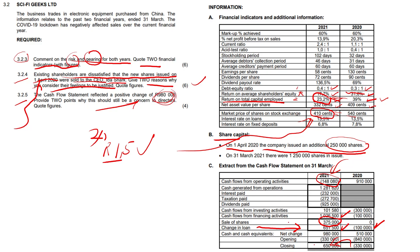They sold shares to the value of 375,000 — that's the one Ida Shark took — which brought 375,000 into the company and helped boost the change in cash. Then they took a massive loan: over 650,000 rands was borrowed. Nothing is inherently wrong with borrowing a lot of money, but that borrowed money must generate very serious returns, and right now there isn't much evidence of that. So how do we frame an answer for four marks?